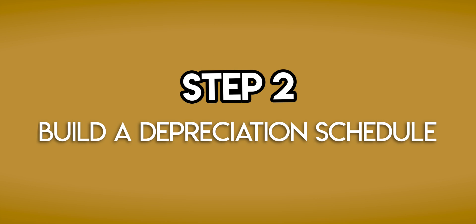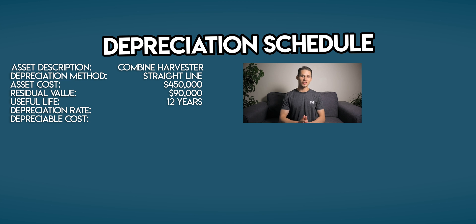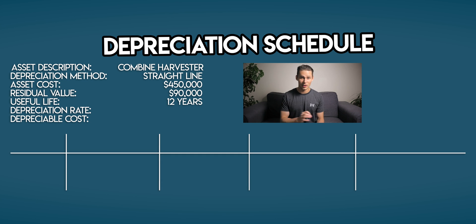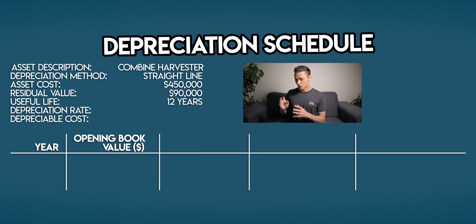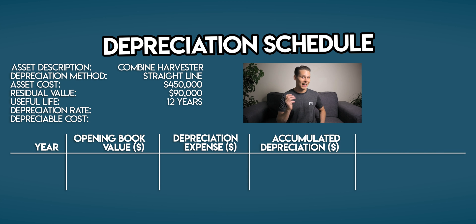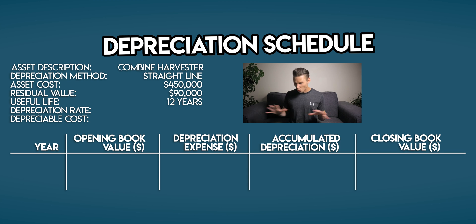Step two: build a depreciation schedule. The depreciation schedule is a table, and for straight line depreciation it has five columns: Year, Opening Book Value, Depreciation Expense, Accumulated Depreciation, and Closing Book Value.